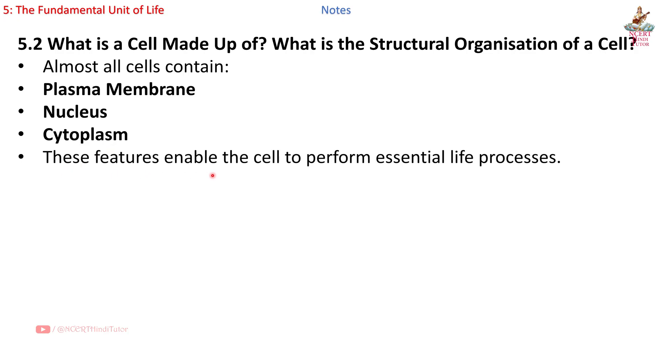Section 5.2: What is a cell made up of? What is the structural organization of a cell? Almost all cells contain plasma membrane, nucleus, and cytoplasm. These features enable the cell to perform essential life processes.